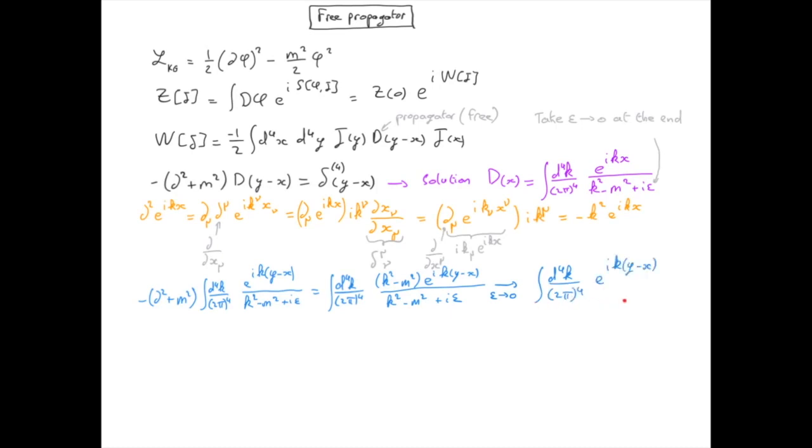This is the Fourier transform of a constant. In this case, the constant is one and that gives us a delta function. We got the same right hand side as our initial equation.